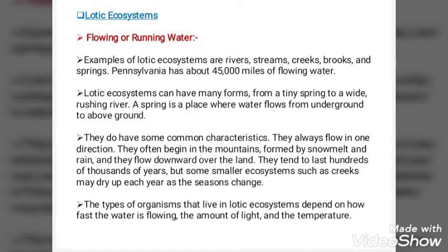Moving on to type two: the lotic ecosystem, which involves flowing or running water. Examples of lotic ecosystems are rivers, streams, creeks, brooks, and springs. Lotic ecosystems can have many forms, from a tiny spring to a wide rushing river. A spring is a place where water flows from underground to above ground. They share some common characteristics — they always flow in one direction.